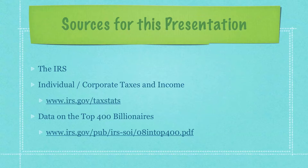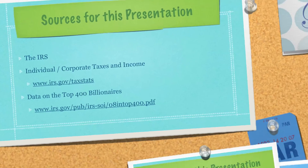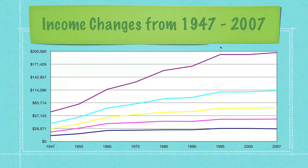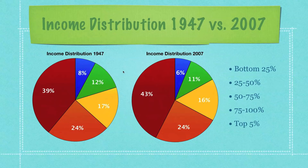For all the information I provide on the top 403 billionaires, you can see the link here on screen. Here are the income changes in the United States from 1947 to 2007. You can see the top 5% up here, and down here is the bottom 25, the next 25 to 50, the next 50 to 75, and the top 25%. In 1947, the average person in the top 5% made right around $60,000, and today in 2007 the top 5% make close to $200,000.